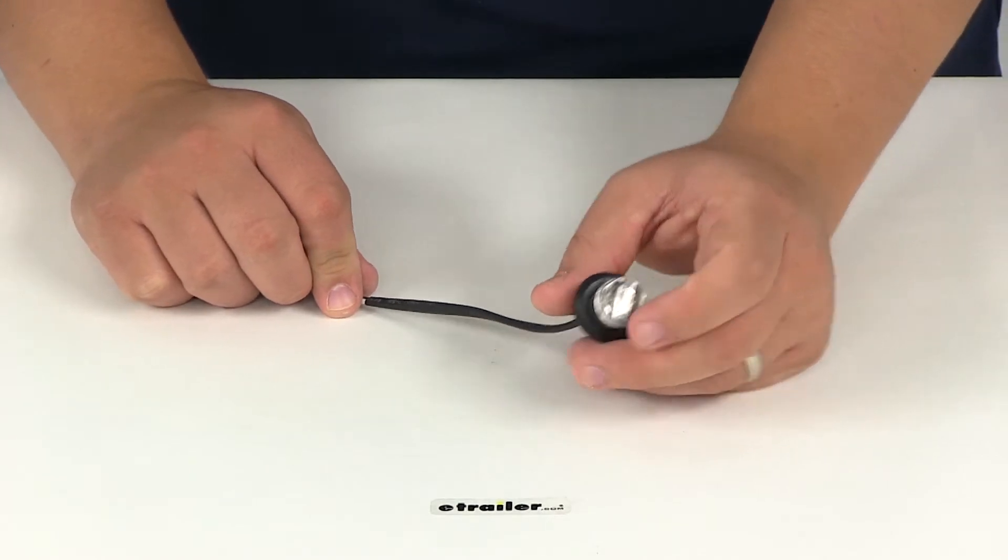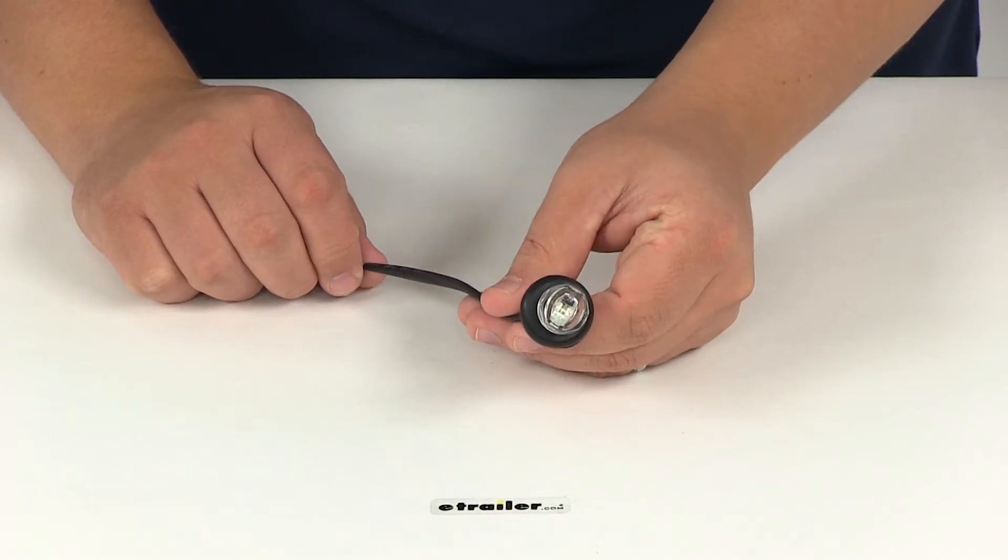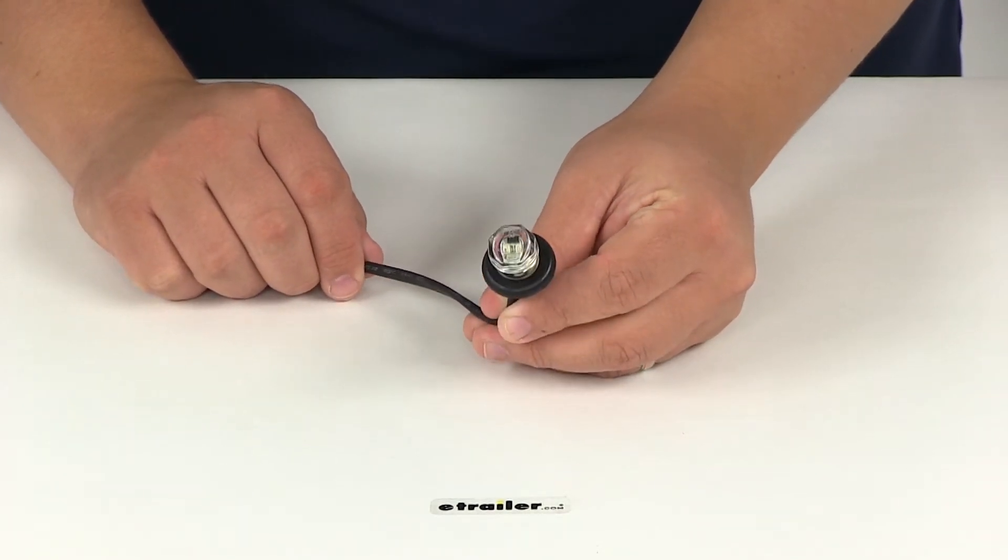This is a mini trailer light that serves two different functions. You can use it as a side marker and a clearance light.